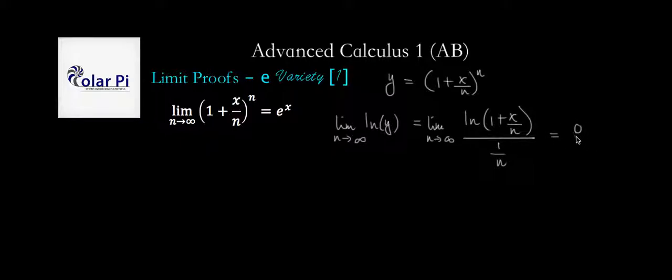So we get 0 over, as n goes to infinity, 1 over n is going to go to 0, so we get 0 over 0, right? So 0 over 0. This is an indeterminate form, which allows us to use L'Hopital's rule.